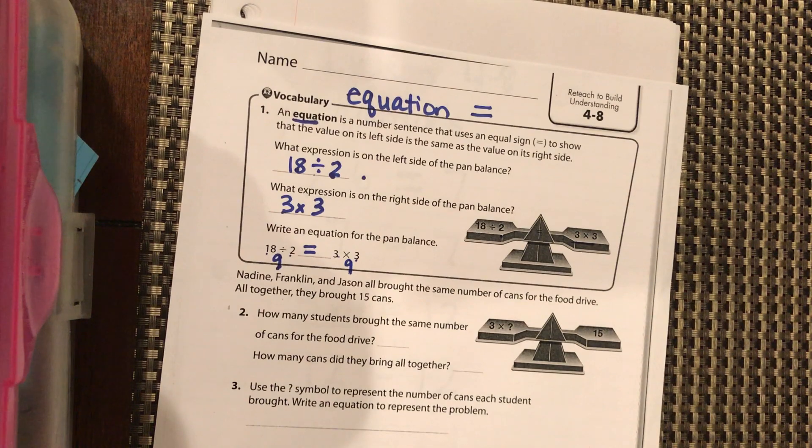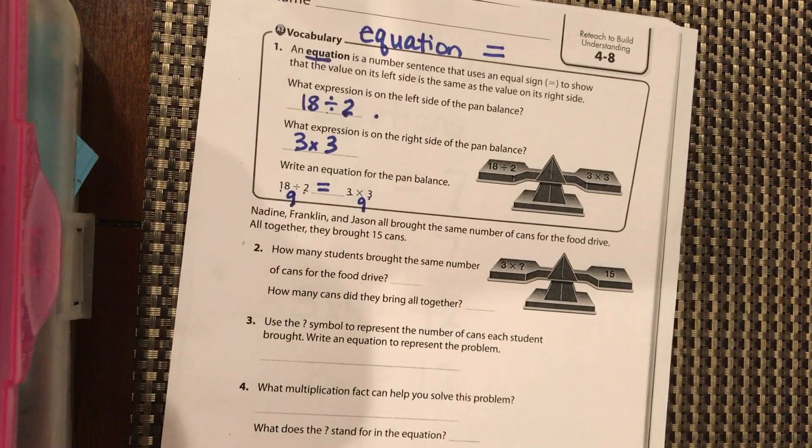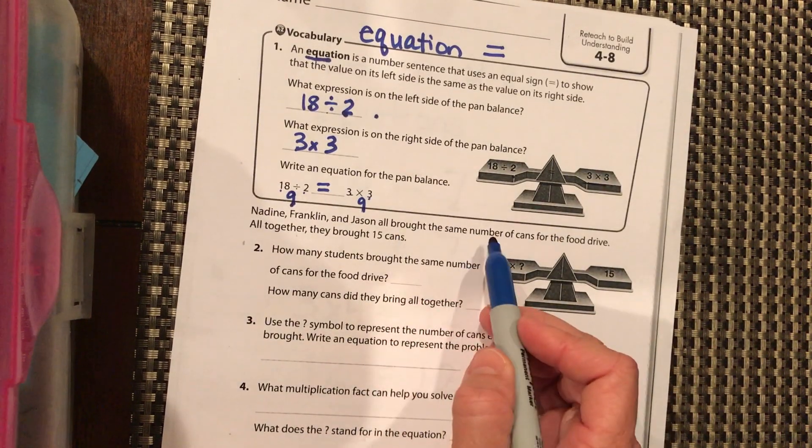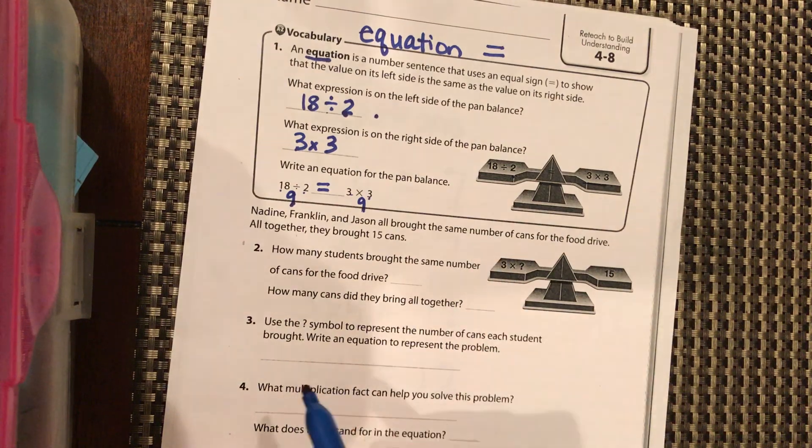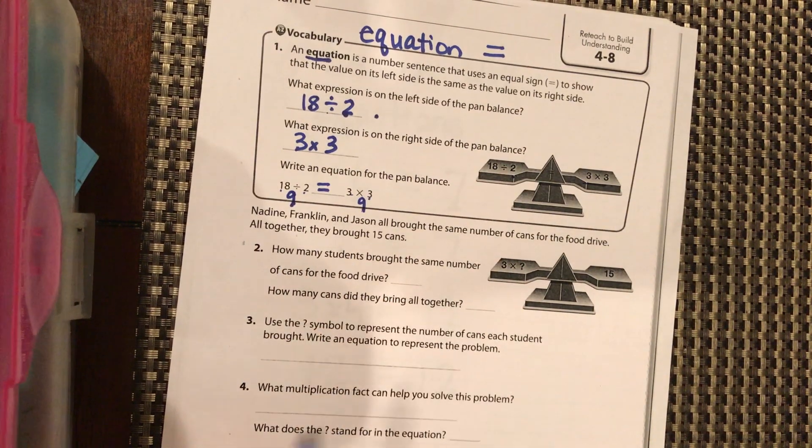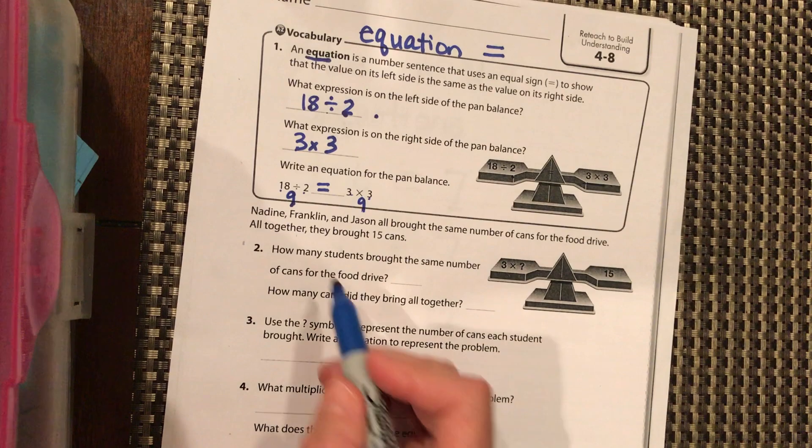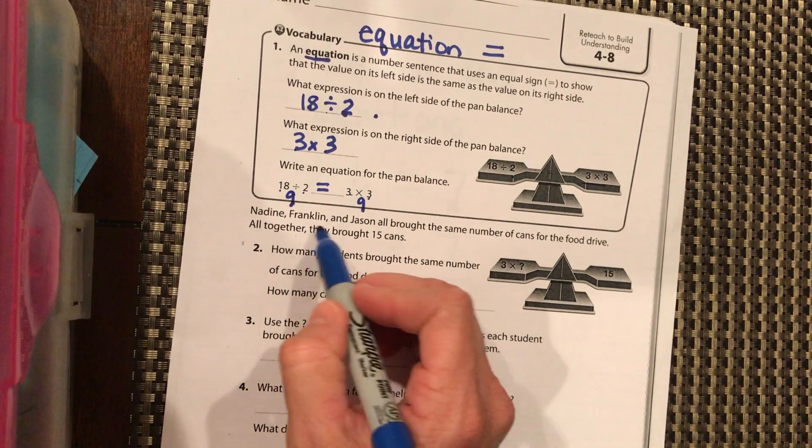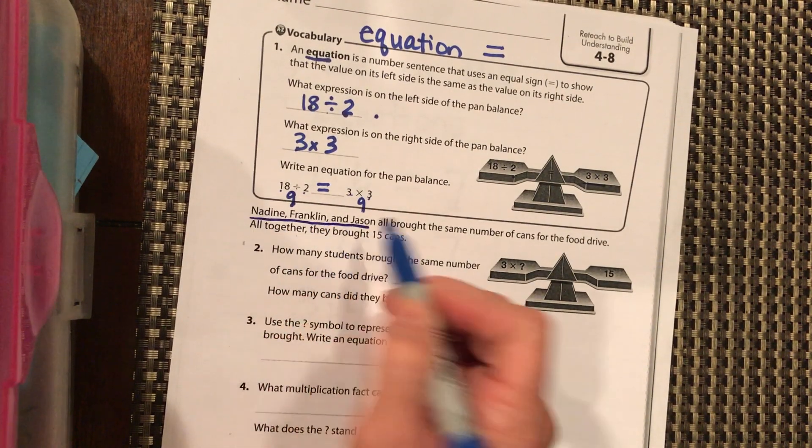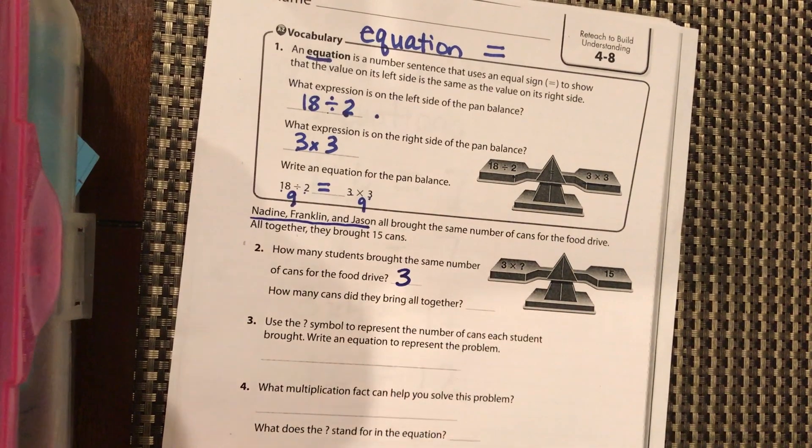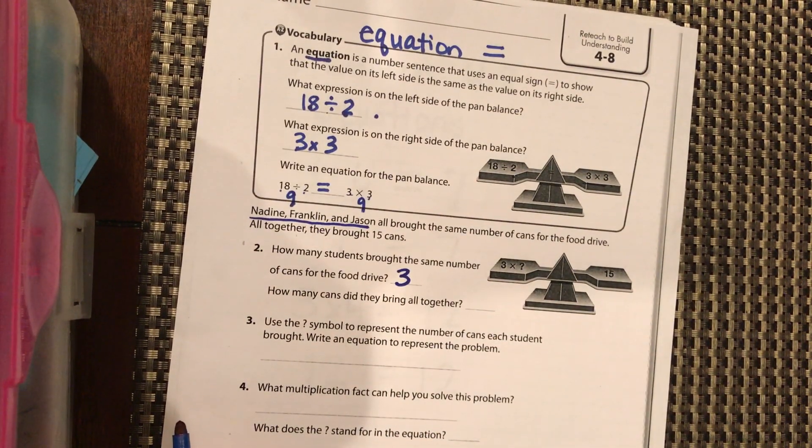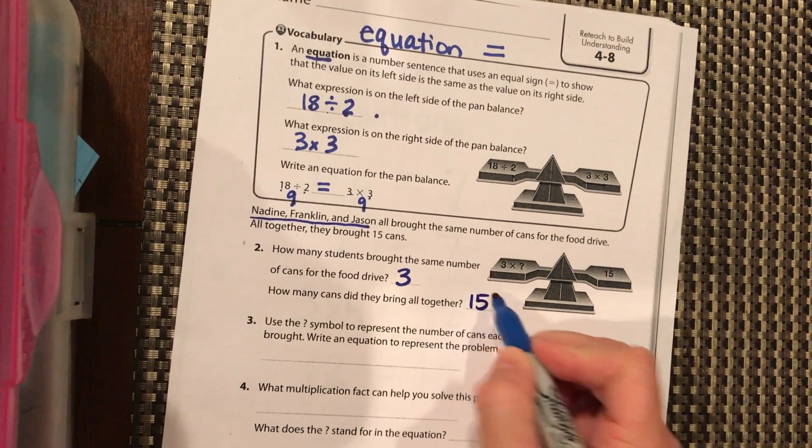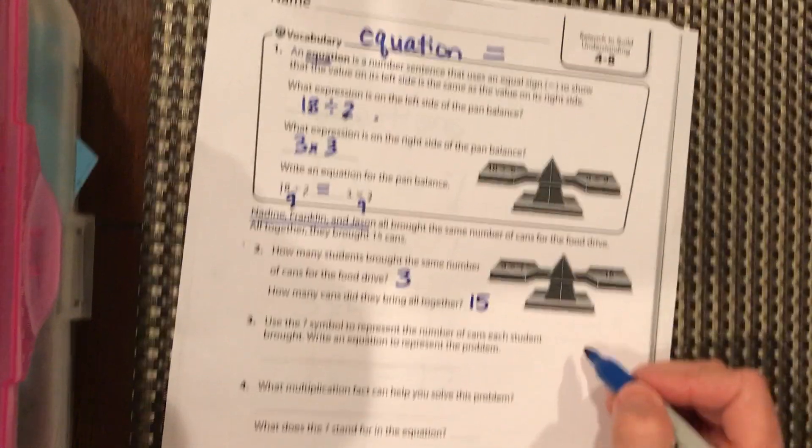Okay, Nadine, Franklin, and Jason all brought the same number of cans for the food drive. All together they brought 15 cans. So how many students brought the same number of cans? It would be Nadine, Franklin, and Jason, so that's three. How many cans did they bring all together? That's 15.